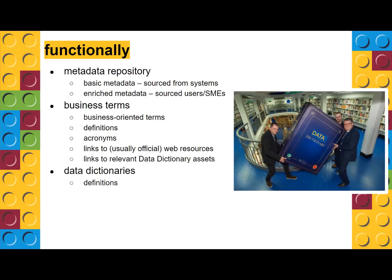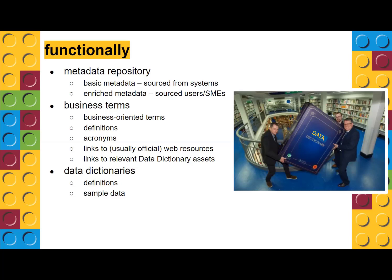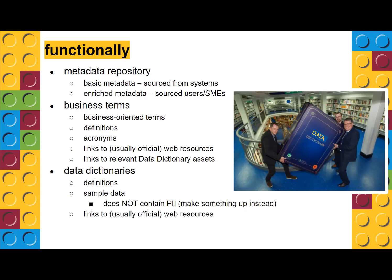The dictionary itself has basic metadata: what is the field, what database is it in, what tables are related to it. We're going to have sample data in the dictionary because sometimes describing something isn't enough until you see it. We do not put PII in there — this is not sensitive data. If a column contains PII, our sample data is made up. This is not a true catalog. We also have ServiceNow, where you request access. A catalog is typically the dictionary side plus being able to request access; all we do is point you over to ServiceNow.